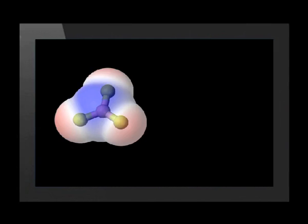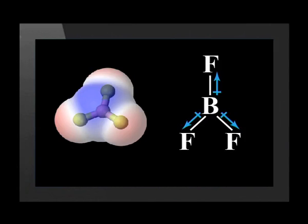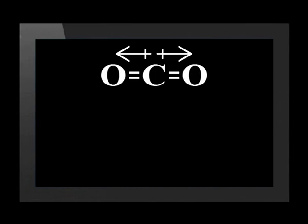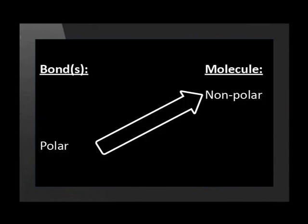It isn't only linear molecules like carbon dioxide which can be nonpolar even though they have polar bonds. Boron fluoride is a flat triangular molecule — we say its shape is trigonal planar. It has very polar bonds, but their vector sum is zero. This molecule does not have a positive and negative end. What do molecules like carbon dioxide and boron fluoride have in common that makes them nonpolar despite their polar bonds? They have symmetrical shapes — the angles between bonds are equal so that the vector sum of the bonds is zero.